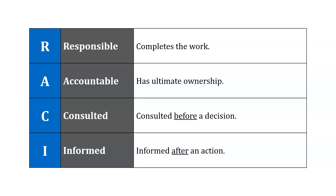If you're responsible for a work package, you're the person actually assigned to do the work. If you're accountable, you make the final decision and have ultimate ownership — often the boss of whoever's responsible. If you're consulted, you must be consulted before a decision or action is taken. If you're informed, you must be notified after the action has been taken. So consulted is before, and informed is after.